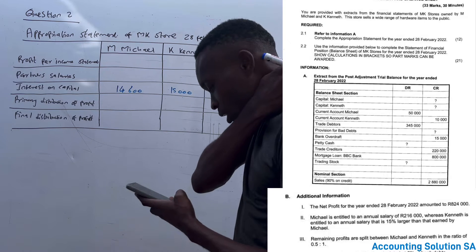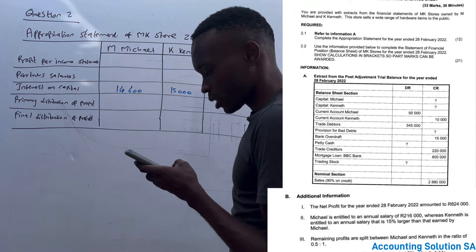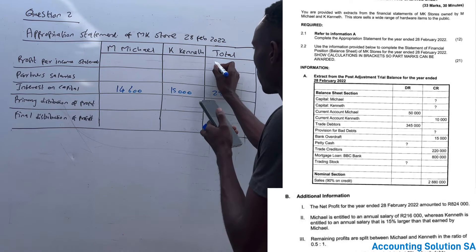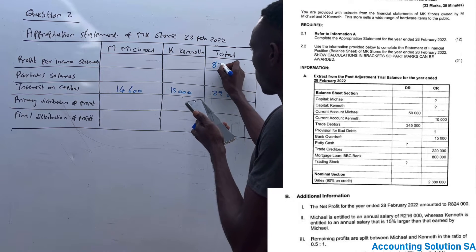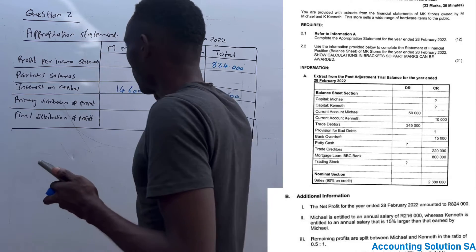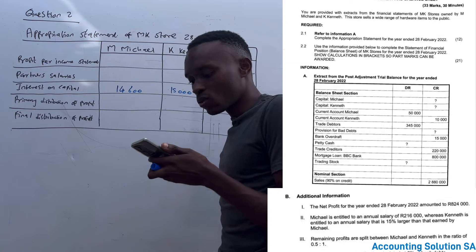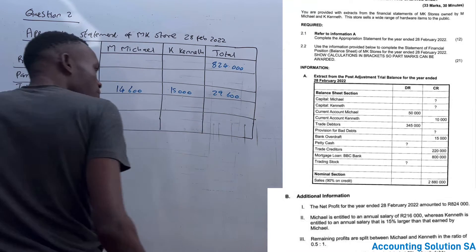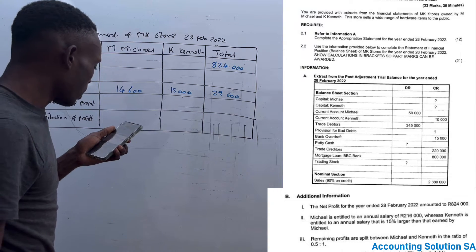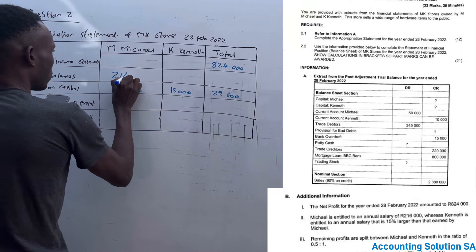Let's check the information we have — the extract from the trial balance. Transaction number one under section B: the net profit for the year ended 28 February 2022 amounted to R824,000. This is our total which we will allocate. Transaction number two: Mitchell is entitled to an annual salary of R216,000. Remember, if you are given a monthly amount, make sure you multiply by 12 because here we record annually. For Mitchell we have R216,000.